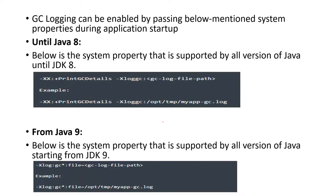We saw how you enable GC logging. By default, applications already have the GC log file path and some GC log flags defined. We explicitly saw how to enable GC and how to set the GC log file path using two flags: PrintGCDetails and Xloggc. In Java 9, you just have to use -Xlog:gc. Then we saw what type of information the GC log file has.